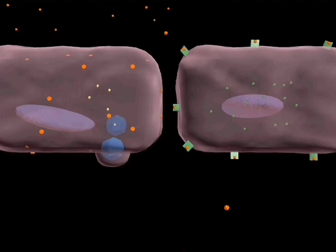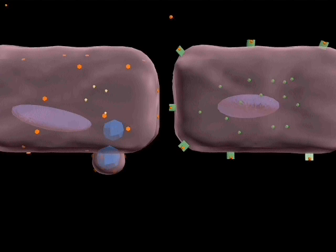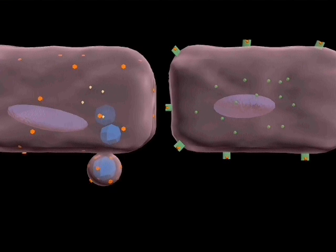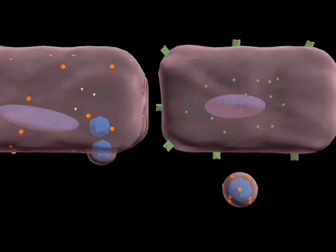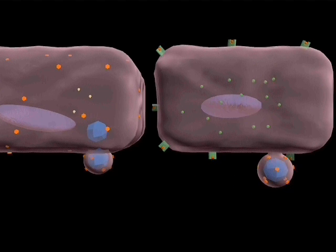They do this by binding to interferon receptors, which signal the synthesis of antiviral proteins. The antiviral proteins can switch the cell into a virus-resistant state if it should become infected.